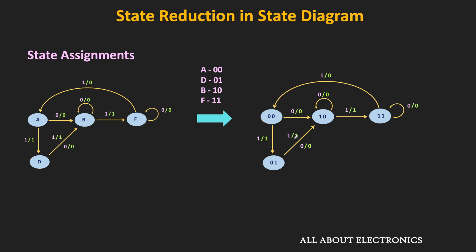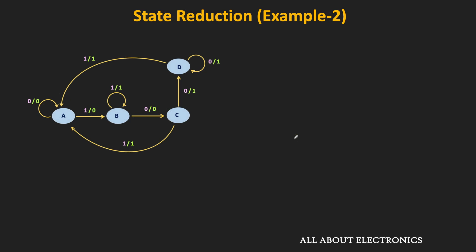From the state table, we can easily find the equivalent states, and by removing such redundant states, we can reduce the cost and the complexity of the circuit. Let's take one more example on state reduction so that the procedure will become clear. Let's say this is the state diagram, and we want to find out if there are any redundant states or not. First of all, let us draw a state table from the given state diagram.